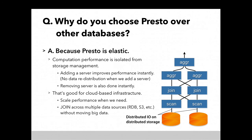The reason I chose Presto is because it's more elastic. Adding and removing servers is easy, which is very good for cloud-based infrastructure. Our infrastructure is built on Amazon EC2, so we can scale up or down only when we need it. Even shutting down a cluster is easy because data is not there — just shut down. And because data is not on worker instances, we don't have to move data when we scale or shut down the cluster. This is very good for cloud-based infrastructure.